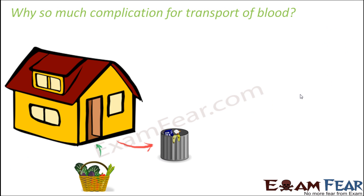You might wonder why we have so much complication for transport of blood. We have a heart — that's fine because it acts as a pump. Then we divided the heart into four different chambers, and then we have valves between every two chambers. Why do we have so much complication? Let's take a common example — forget about the heart.